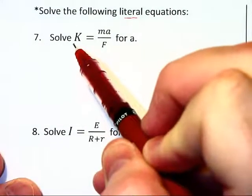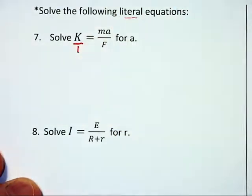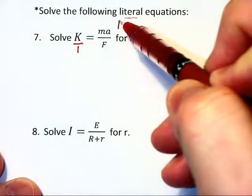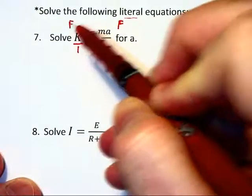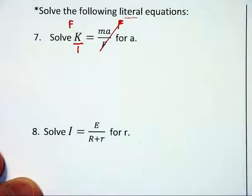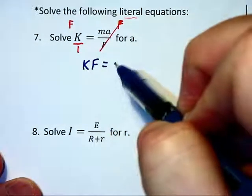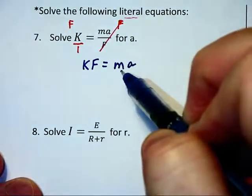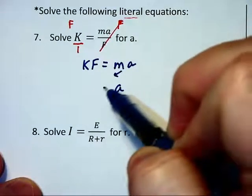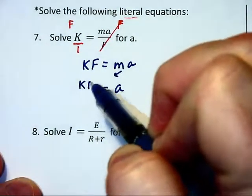I would like to put the k on the left here over 1 and then multiply through by the least common denominator of f in order to cancel the f's on each side. This is going to give us kf is equal to ma and then dividing the m off of each side we have a is equal to kf over m.